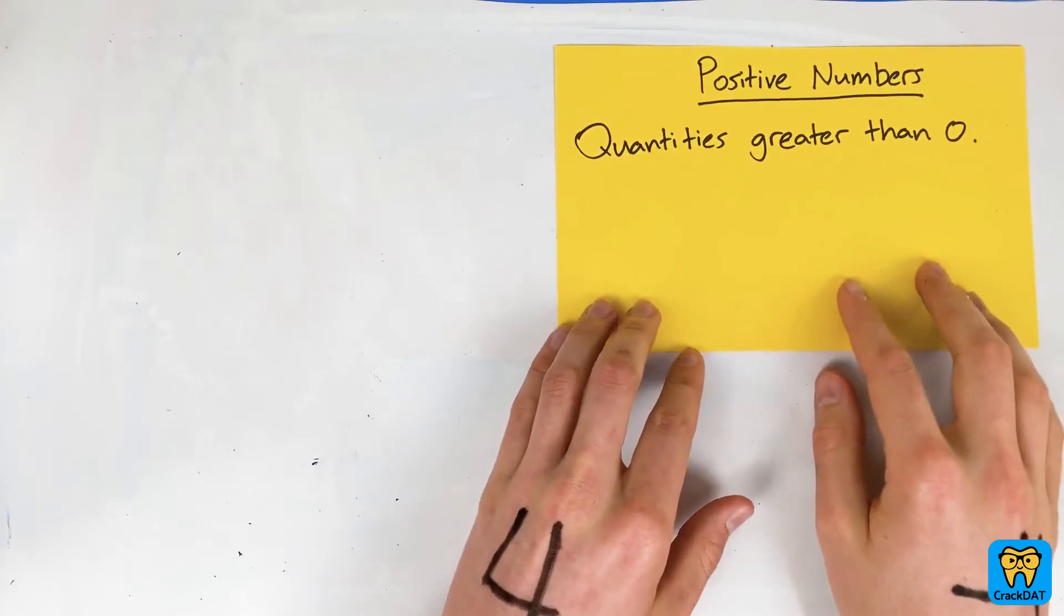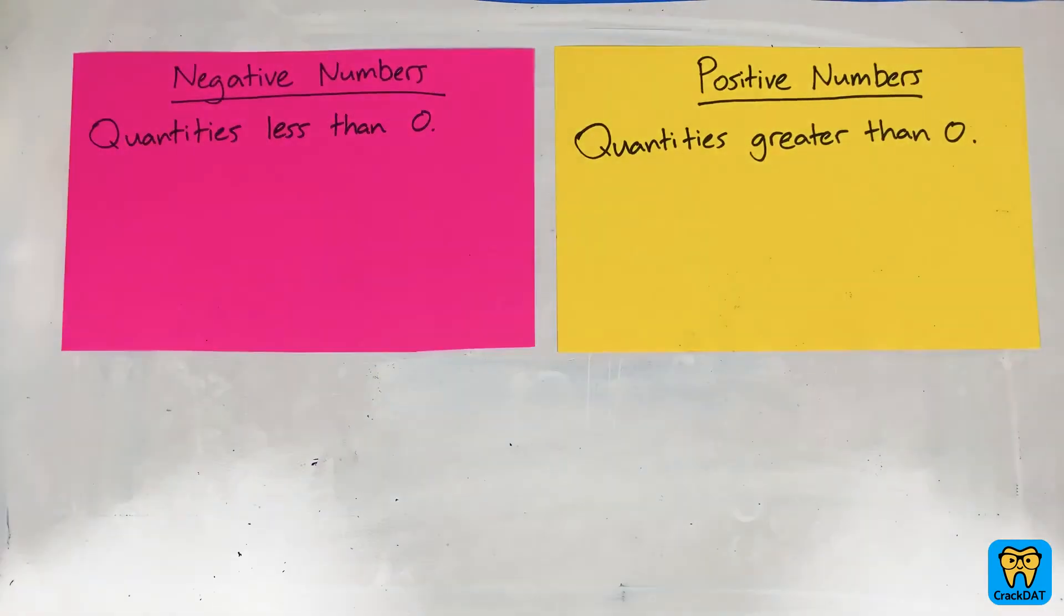Positive numbers are defined as numbers greater than 0, while negative numbers are numbers less than 0.